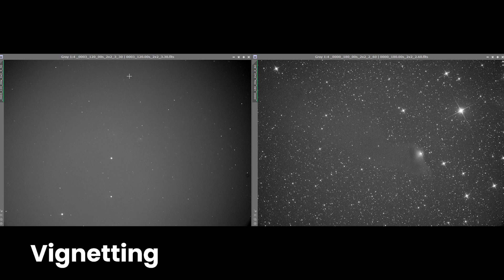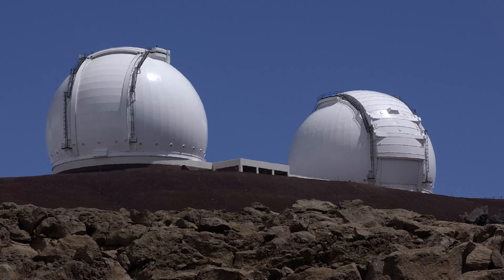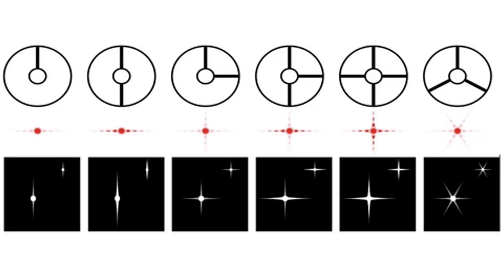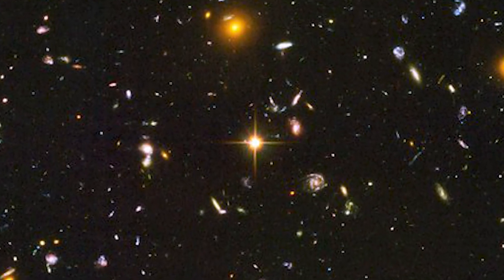Another optical effect is vignetting, which occurs when parts of the telescope's optical path block some incoming light, causing darkening at the edges of the image. It's very common in reflecting telescopes because they often have a secondary mirror at the center — part of the Newtonian design. Many telescopes including Keck and the upcoming Giant Magellan Telescope have a secondary mirror that blocks some incoming light, and you can also have diffraction where light scatters off the secondary mirror and its support structure, called the spider. The Hubble Space Telescope suffers from this.